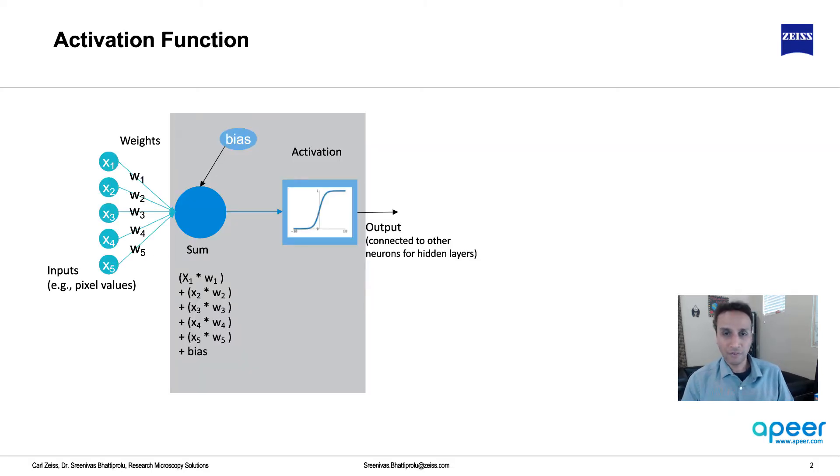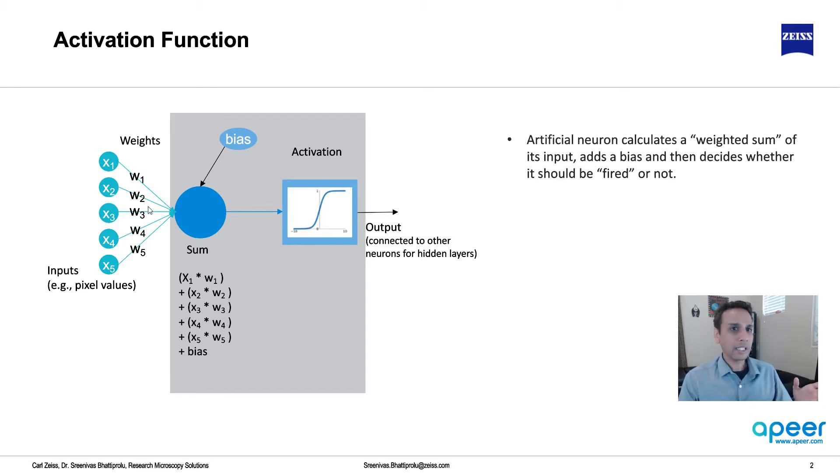Now first of all, what is activation function and what is the need for activation function? Let's take a step back to three, four videos ago where we talked about deep learning. We looked at artificial neuron. What is an artificial neuron? It calculates the weighted sum of its input and adds the bias and decides whether the neuron should fire or not, just like regular neurons in the brain. That's what an artificial neuron is.